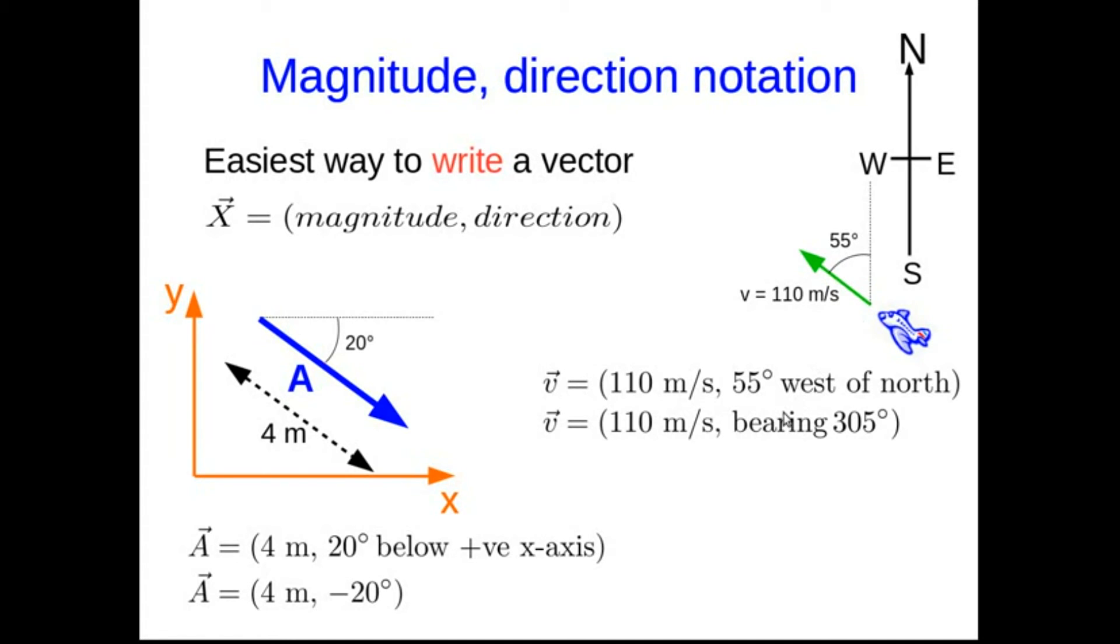Or if you know about compass bearings, that's bearing 305 degrees. It's 305 degrees around from due north.